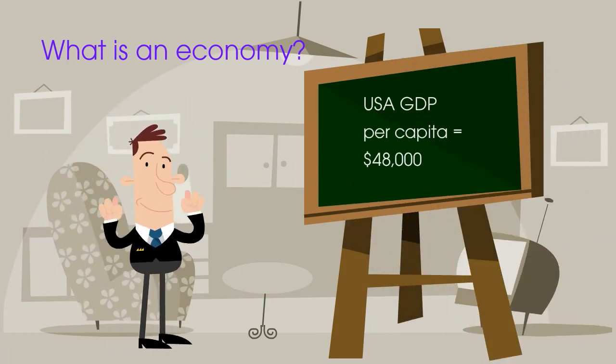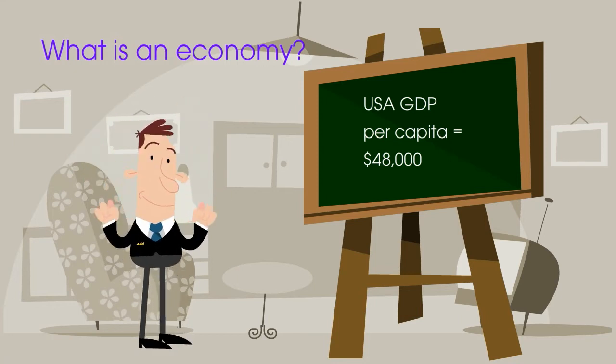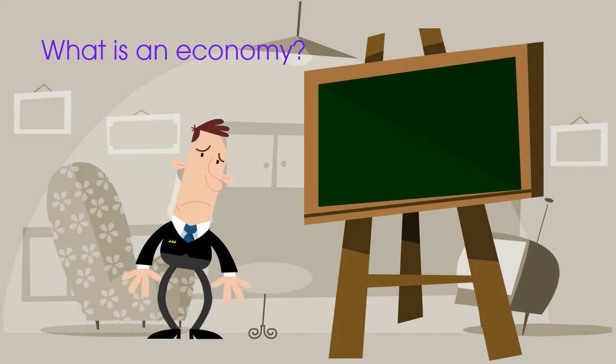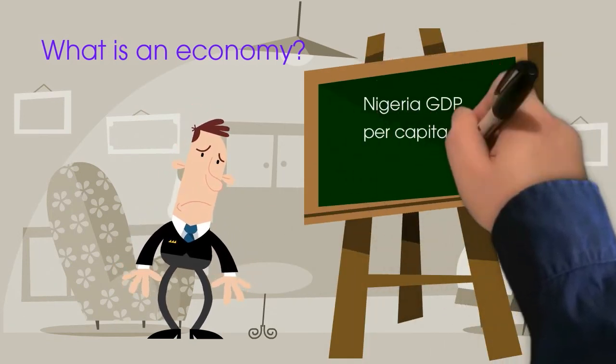So for example, the annual GDP per capita of the USA is about forty-eight thousand dollars, whereas in Nigeria it's only two and a half thousand dollars.